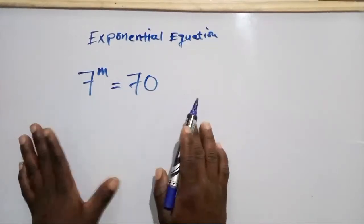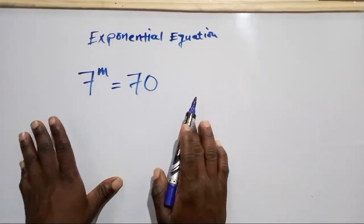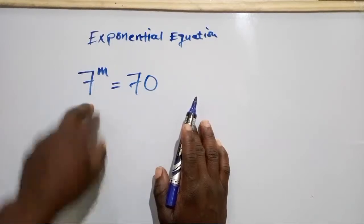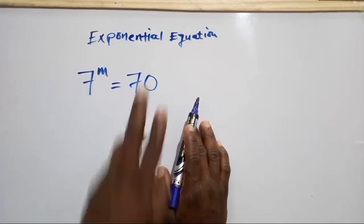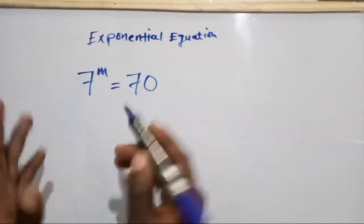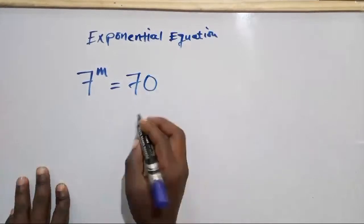I have seen many people using the long procedure of solving this question. We have this equation which is 7 to the power m equals 70, and I have the short way on how you can deal with such a question. So let's get started with the solution.